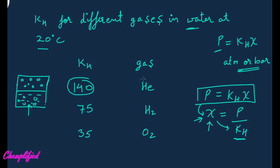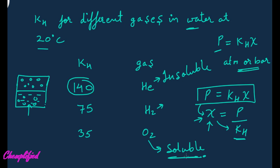According to this, helium is almost insoluble in water, hydrogen is somewhat soluble, and oxygen is soluble in water. You already know this because aquatic life uses oxygen dissolved in water — we are talking about O2 molecules dissolved in water, not the oxygen in H2O. The value of KH for oxygen is low, meaning its solubility is highest. If the value of KH is low, solubility is highest; if KH is high, solubility decreases to a greater extent.